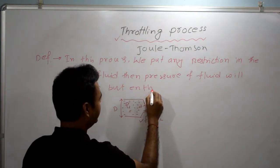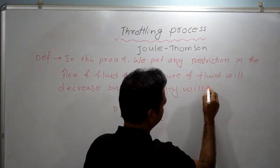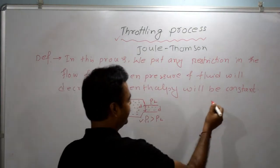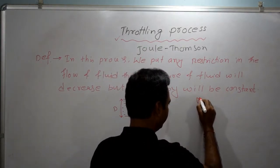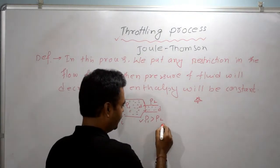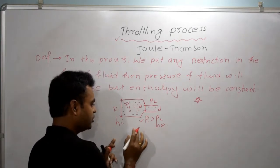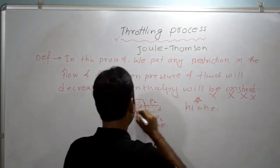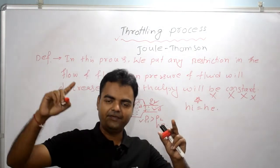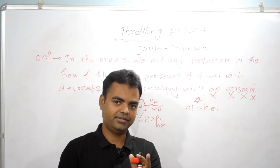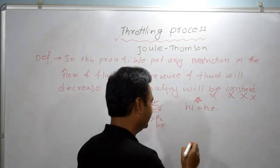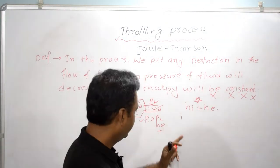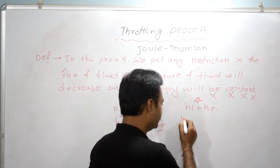But the enthalpy will be constant — here is the catch, an important point. The input enthalpy and output enthalpy will both be equal, meaning h_i is equal to h_e. It will not be constant throughout the process; rather, the input enthalpy and exit enthalpy will be equal. Remember this — we often make mistakes here.